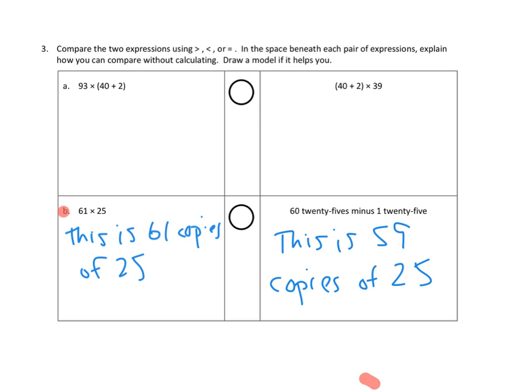And even if I can't figure this out exactly, I know that 61 copies of a positive number like 25 is bigger than 59 copies of 25. So I know that this is bigger because there are more copies of 25 over here. In fact, I know exactly how much bigger, right? There's two extra copies of 25. So I know that this is bigger. I'm going to just put this in below. Bigger by 50.